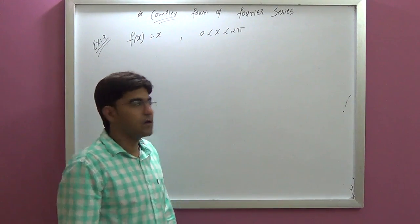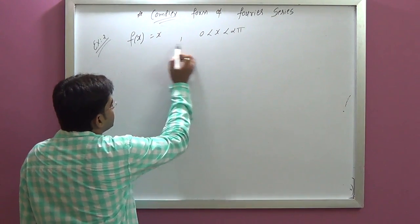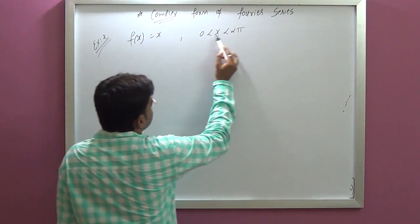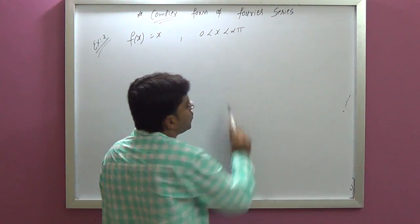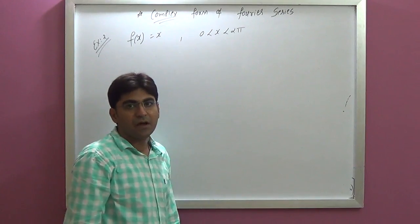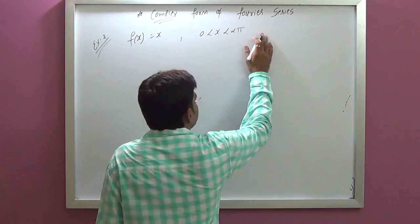Now, next example: f of x, the limit term is 0 to 2π and x less than 2π. Find the complex Fourier coefficients.